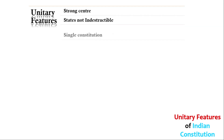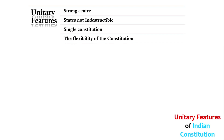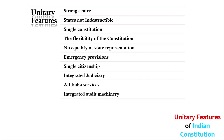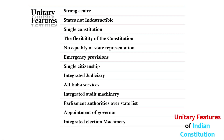Let's see the unitary features of the Constitution. The unitary features include: Strong Centre, States Not Indestructible, Single Constitution, Flexibility of the Constitution, No Equality of State Representation, Emergency Provisions, Single Citizenship, Integrated Judiciary, All India Services, Integrated Audit Machinery, Parliament Authority over State List, Appointment of Governor, Integrated Election Machinery, and Veto over State Bills. Now let's see each of these in detail.